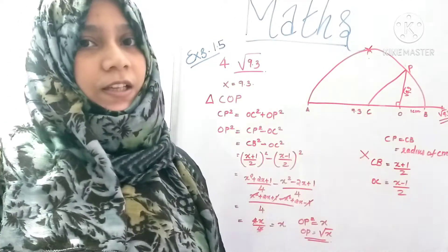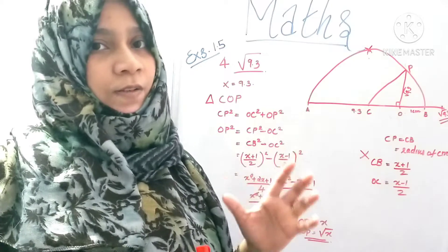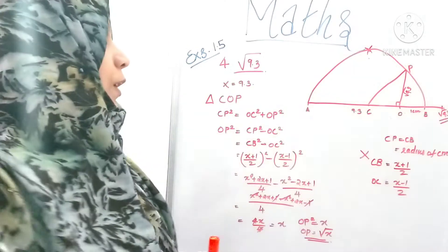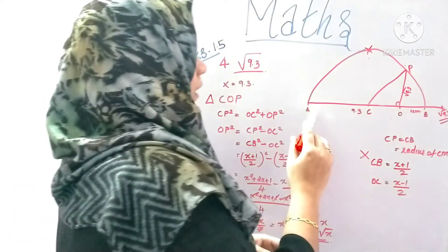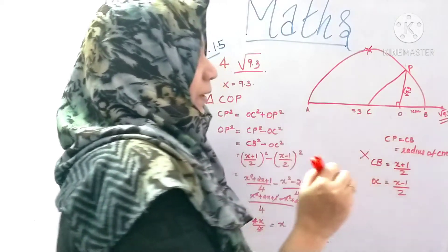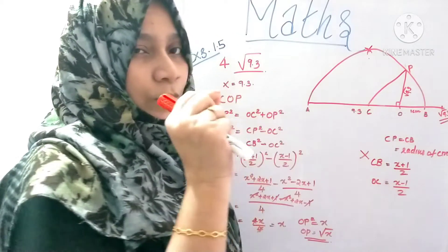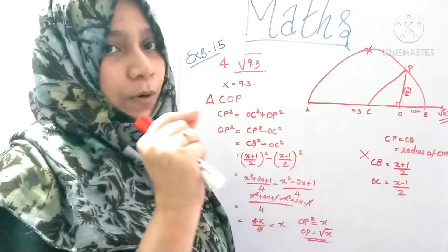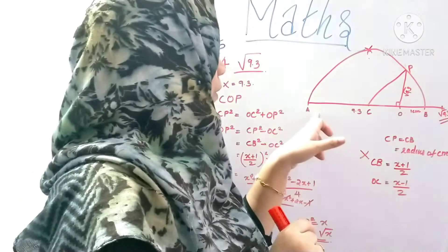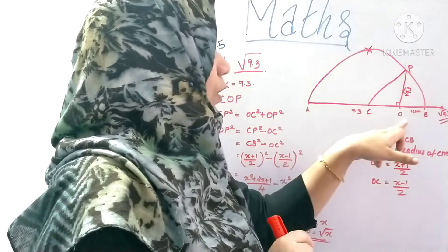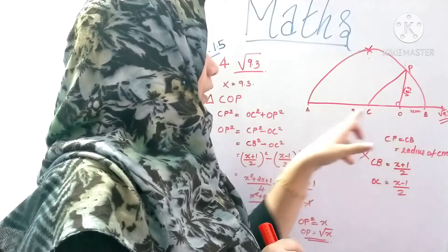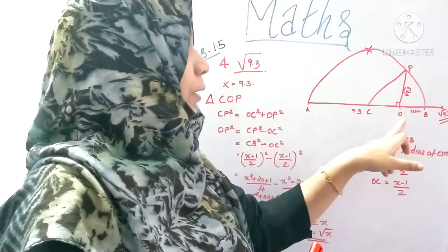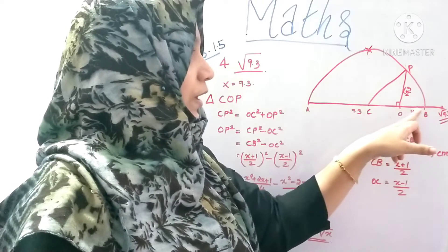You can see that, because the scale is not perfect, you can see how much the scale is roughly here. Now, the scale is 9.3. Now we have to draw a line, so the size of a circle is 9.3.